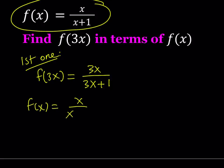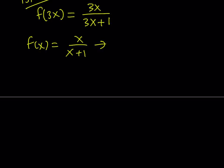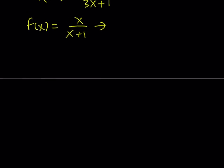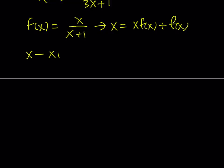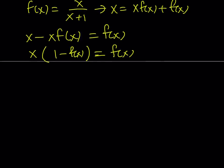f of x is equal to x over x plus 1, and we're going to solve for x so that we can replace x in f of 3x with something in terms of f of x. Let's solve this equation for x by cross multiplying: x equals x times f of x plus f of x. Subtracting x times f of x from both sides and factoring out x gives x times 1 minus f of x equals f of x, so x equals f of x divided by 1 minus f of x.